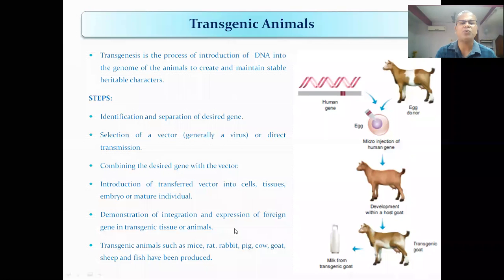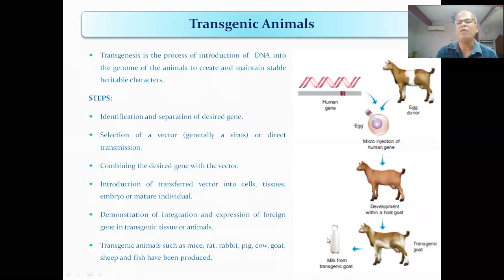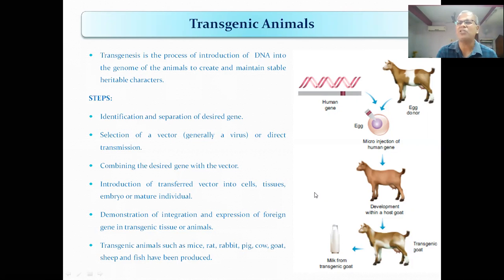The genes of interest are introduced into the tissue or animal. For example, if you introduce the insulin gene into a sheep, the sheep's milk becomes enriched with insulin. The gene you introduce determines what product you get.